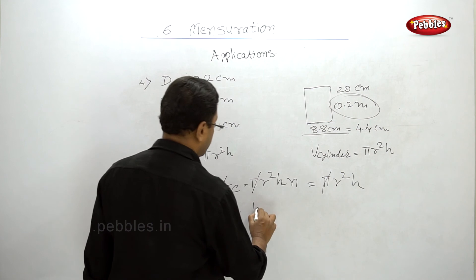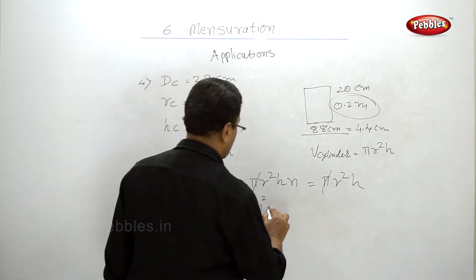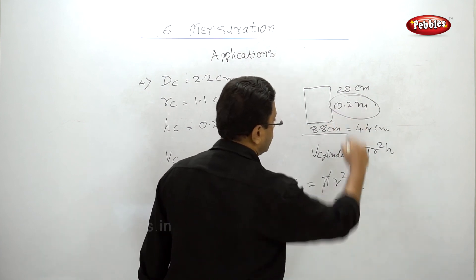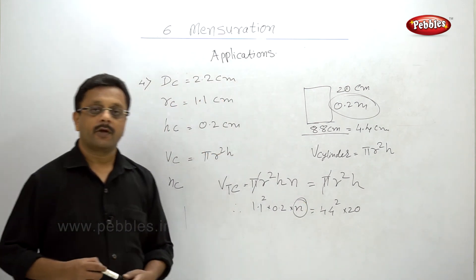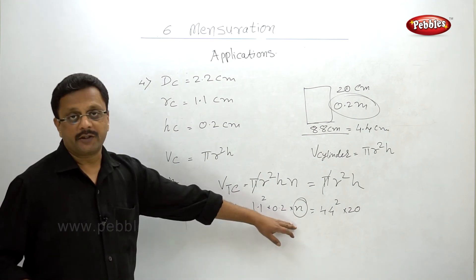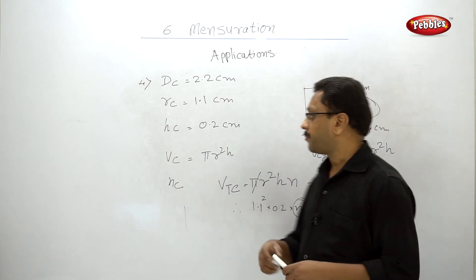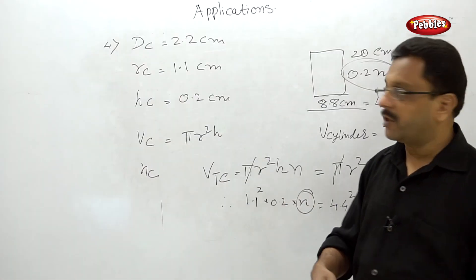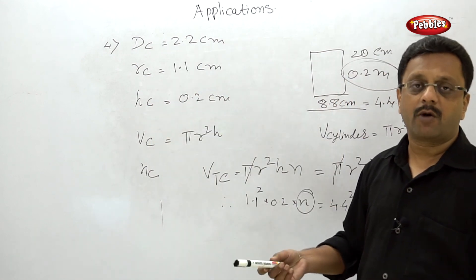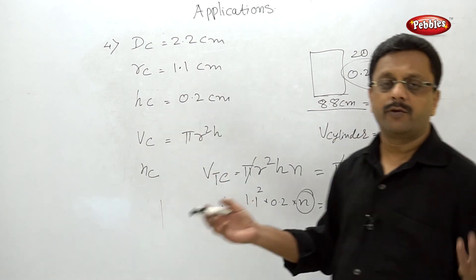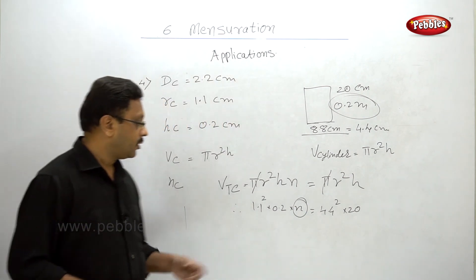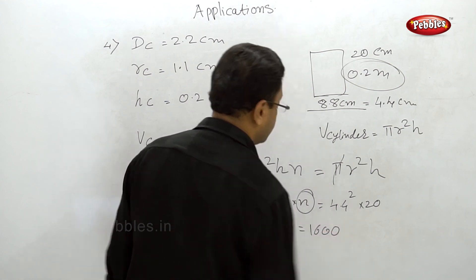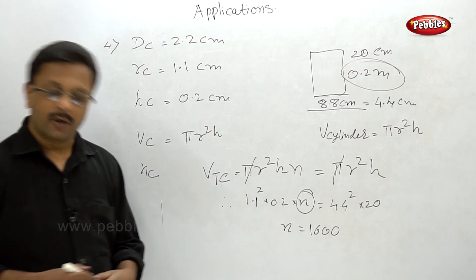So: (1.1)² × 0.2 × n = (4.4)² × 20. The π cancels. You can either solve this equation directly or calculate both volumes separately and divide. Please pause your video and calculate the number of coins. The answer is n = 1600 coins.